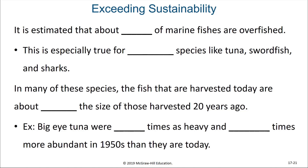It is estimated that about 70% of marine fishes are already overfished. This is especially true for large species like tuna, swordfish, and sharks. In many of these species, the fish that are harvested today are about half the size of those that were harvested 20 years ago.